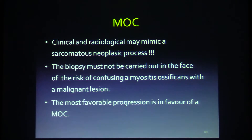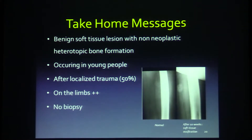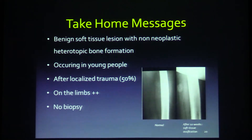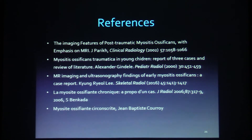The most favourable progression is in favour of a myositis ossificans. Take-home message: it is a soft tissue lesion with non-neoplastic heterotopic bone formation occurring in young people after localized trauma in 50% of cases, on the limbs, and no biopsy is necessary. Thank you very much.